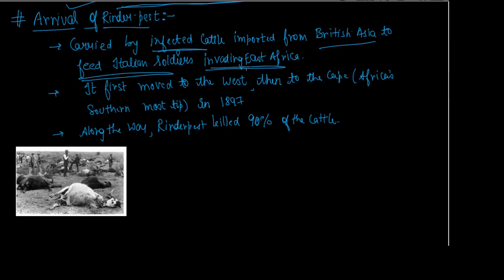This cattle was brought from Asia to feed Italian soldiers who were invading East Africa. When the virus entered the continent, it spread everywhere. It first moved to the west, then to the Cape — the southernmost tip of Africa — reaching there in 1897.